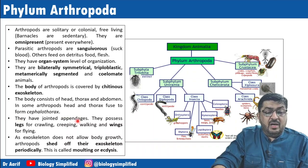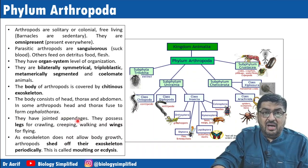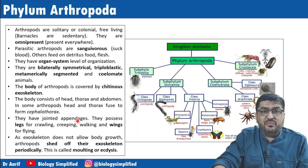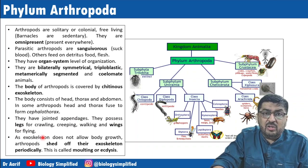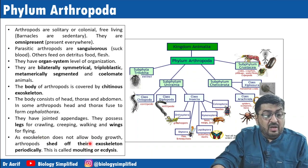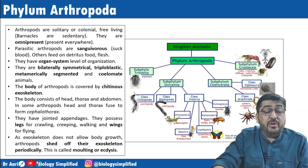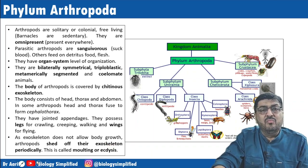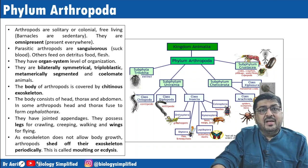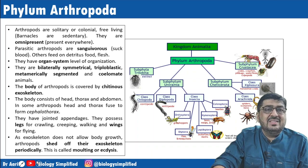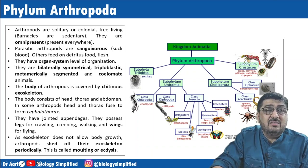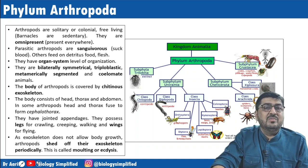They have jointed appendages — the name Arthropoda means 'jointed feet' (arthra = joint, poda = feet). They possess legs for crawling, creeping, walking, and wings for flying depending on habitat. The exoskeleton does not allow body growth, so Arthropods shed their exoskeleton periodically. This is called ecdysis or molting. In cockroach, ecdysis occurs 13 times before it becomes an adult.